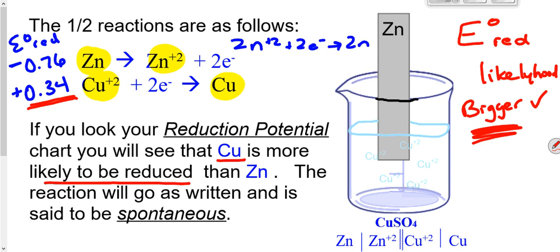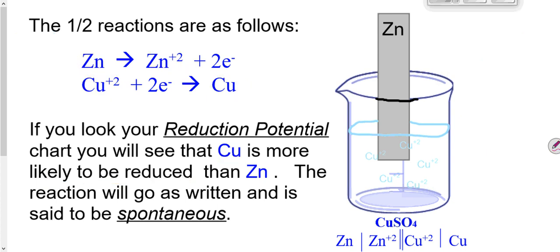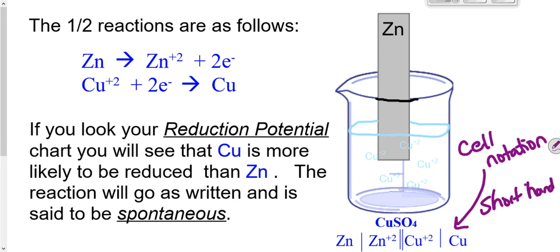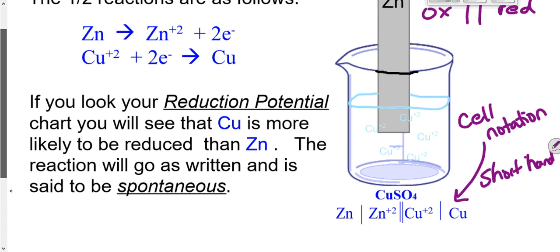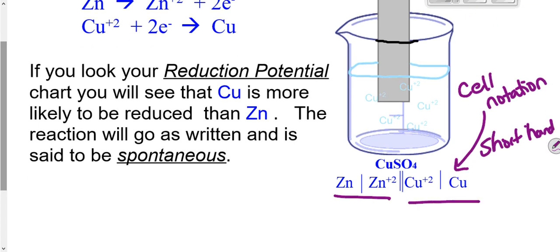When a reaction goes the way we'd expect it to go, we say that it's spontaneous. Now at the bottom of your page we have something called cell notation. Cell notation is a kind of chemical shorthand — it tells us what's happening in the reaction. We always start by putting the oxidation half first, separate it from the reduction half with a double line, then put the reduction half second. Zinc was oxidized from zinc metal to Zn²⁺, and copper was reduced from Cu²⁺ to copper metal.